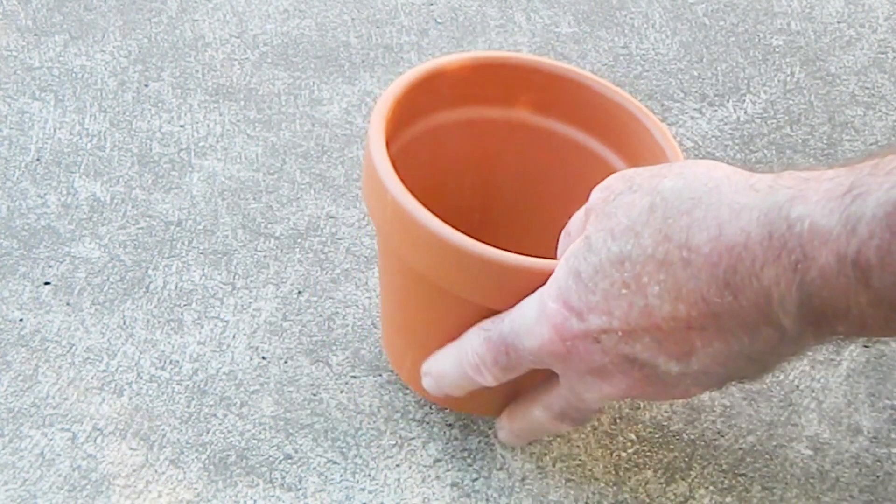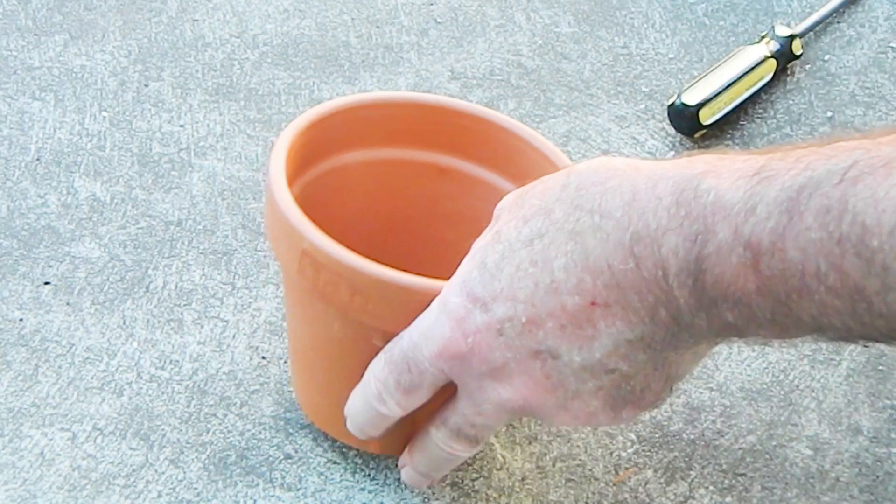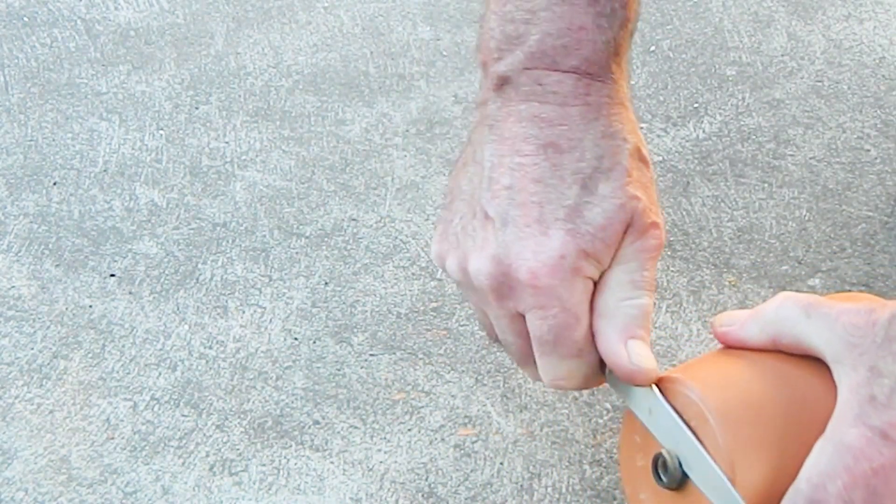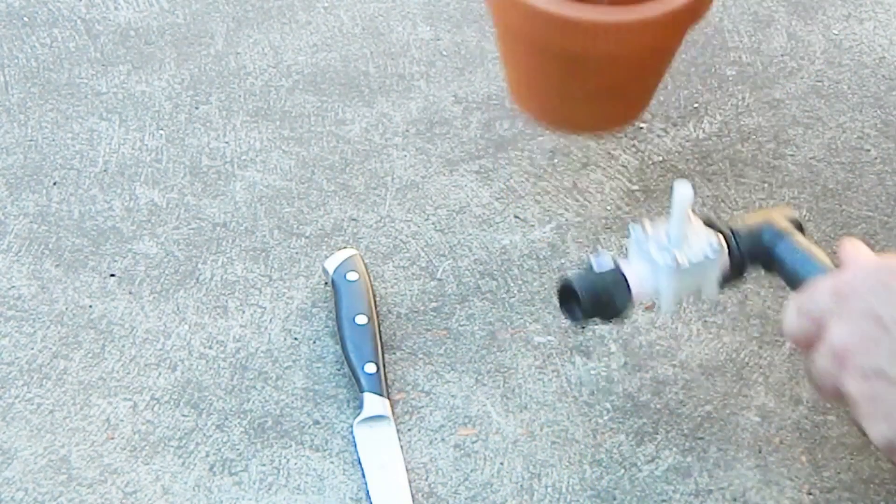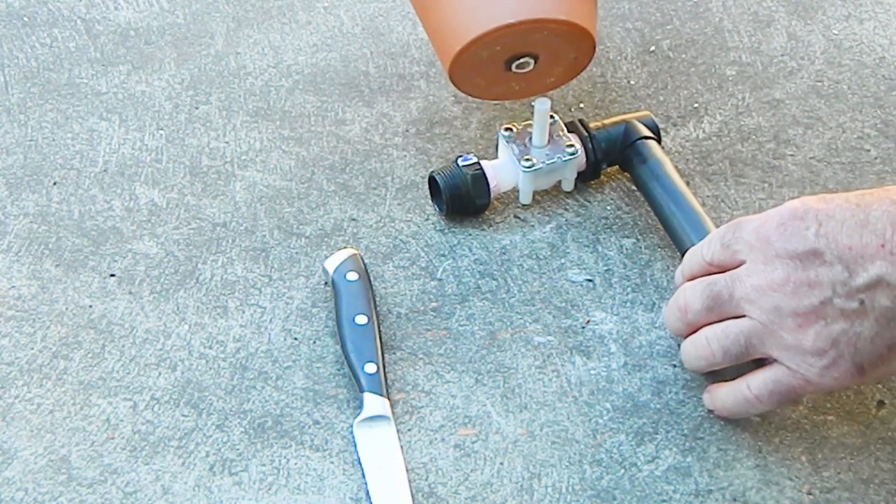Insert the grommet into the drain hole. Insert the acrylic tube into the grommet so that it is flush with the bottom of the pot. Using a sharp knife, cut off the grommet so that it is flush with the bottom of the pot. Slide the acrylic tube over the white plastic shaft.